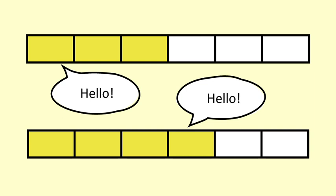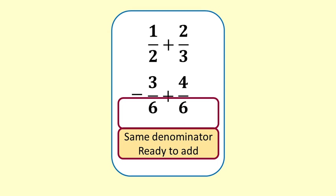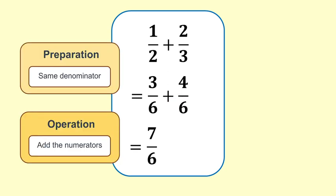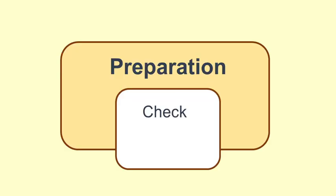1 half plus 2 thirds can be expressed as 3 sixths plus 4 sixths. The two fractions are now ready to add as they've been expressed with a common denominator — they have the same units. We can move on to the operation step: 3 sixths plus 4 sixths equals 7 sixths. Now that you've seen why we need to prepare the fractions, we will go through the actual process. Check if the denominators are the same; if they are, we can proceed right away to adding the fractions.